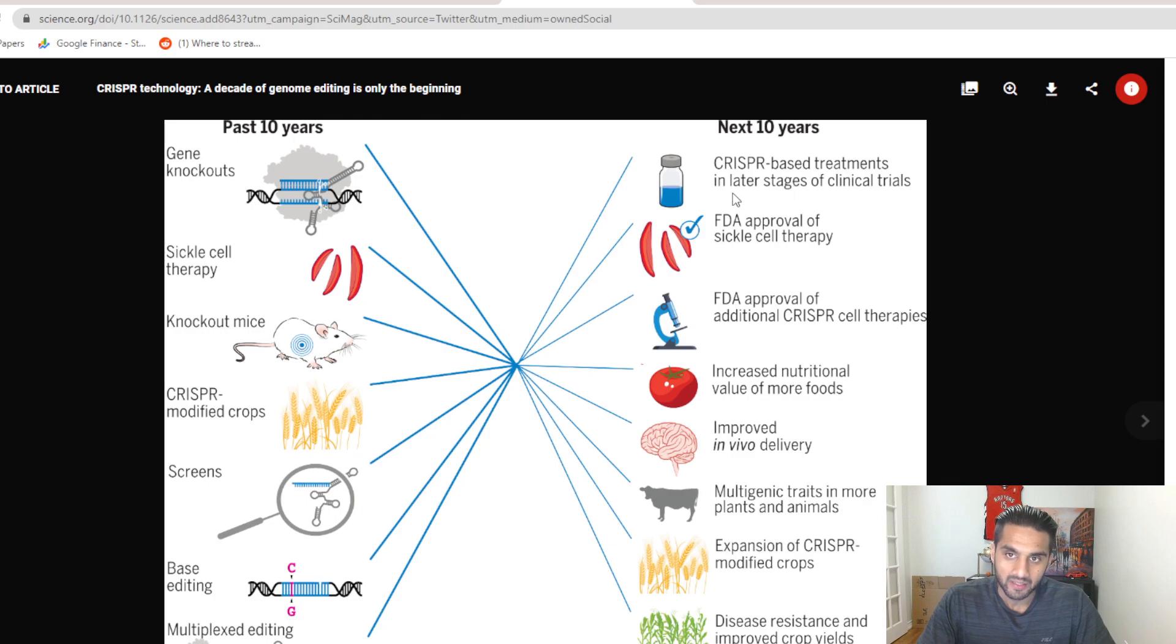CRISPR-based treatment in later stages of clinical trial. FDA approval of sickle cell therapy, I would say this could be in the next month really, we could get an announcement. I wouldn't say next 10 years for sickle cell therapy either. FDA approval for additional CRISPR cell therapies. We're looking at all these programs we have ongoing. Increased nutritional value of more foods, that's really important. I think there was that paper we covered in 2022, early part of 2022. We did a video on this.